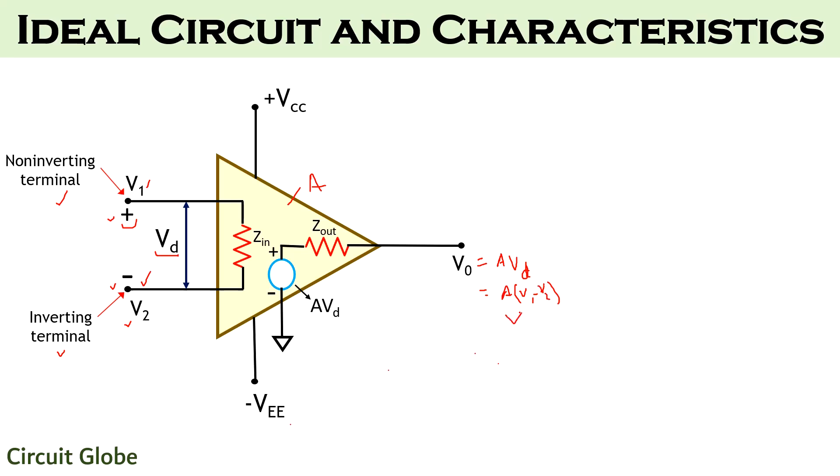From this expression, we can clearly say that the output voltage is proportional to the algebraic difference of the two input voltages. Thus, we can say that difference is amplified and not the original input.